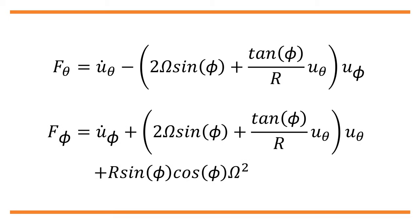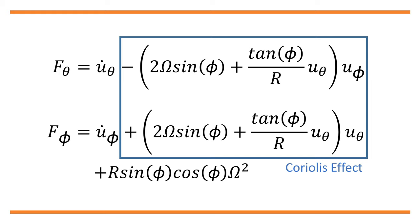And this is the equation of motion we want. In the equation, we can see the Coriolis effect, which is −(2Ω sin(φ) + tan(φ)/R · u_θ) u_φ for the θ coordinate and +(2Ω sin(φ) + tan(φ)/R · u_θ) u_θ for the φ coordinate. We can also see the centrifugal effect, which is zero for the θ coordinate and R sin(φ) cos(φ) Ω² for the φ coordinate.